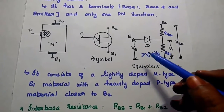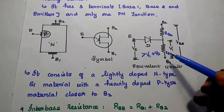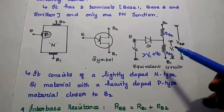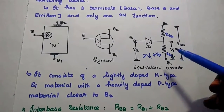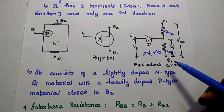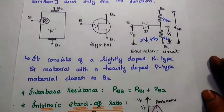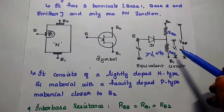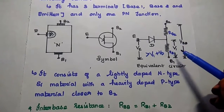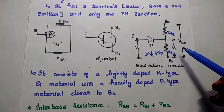If the emitter voltage is less than the voltage across RB1, then the UJT does not conduct. That is the operation of UJT. If we want to find out the value of V1, we can use the voltage divider rule.